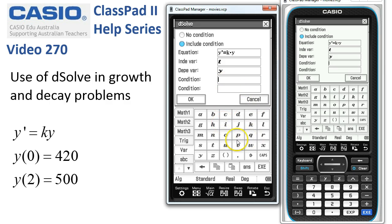Our conditions are that when time is zero we're told that y is 420, so we'll put in t equals zero and in the next line the condition is that y is equal to 420.